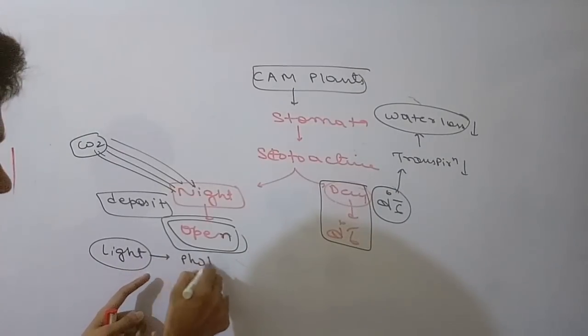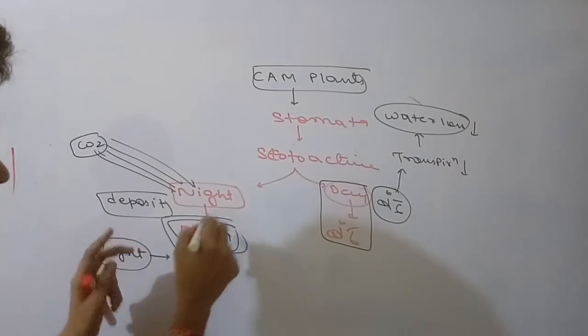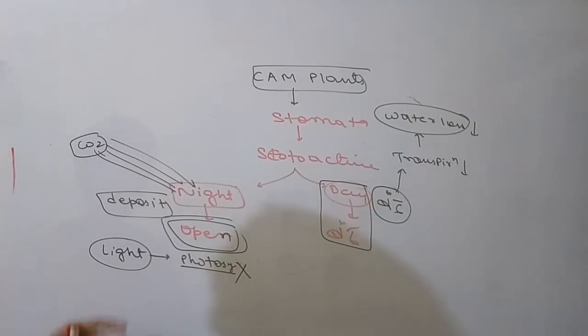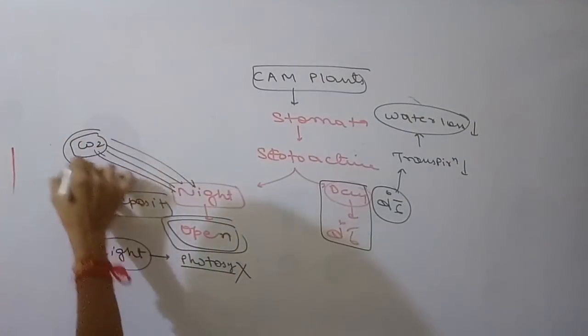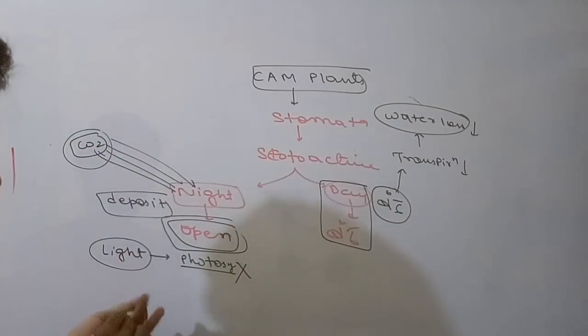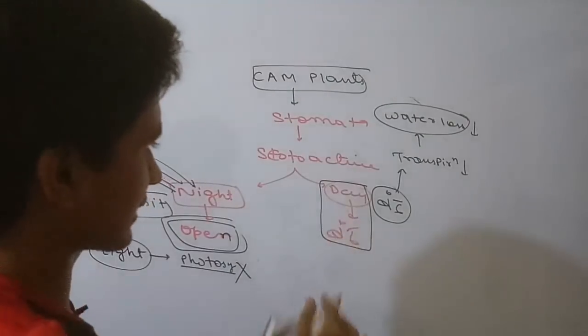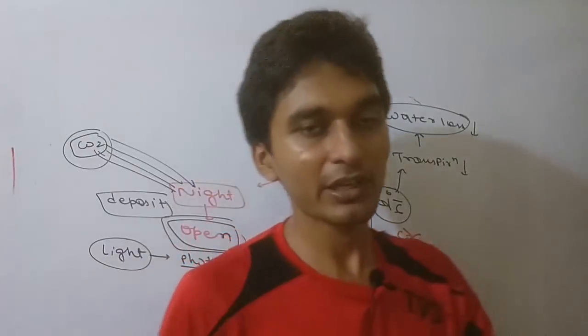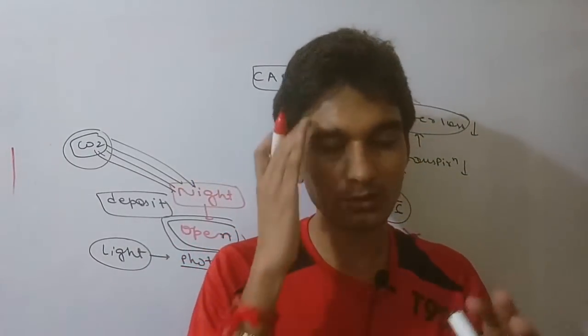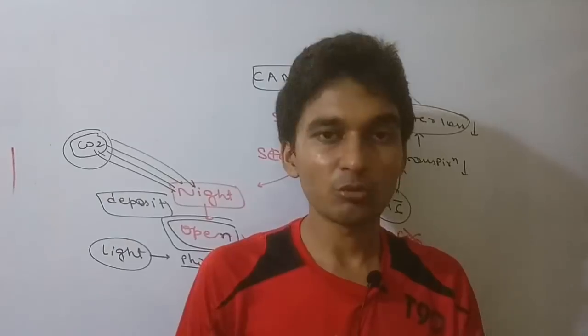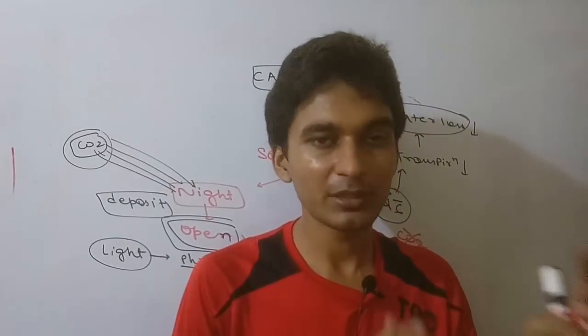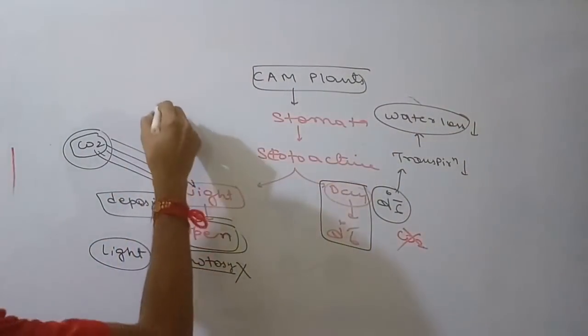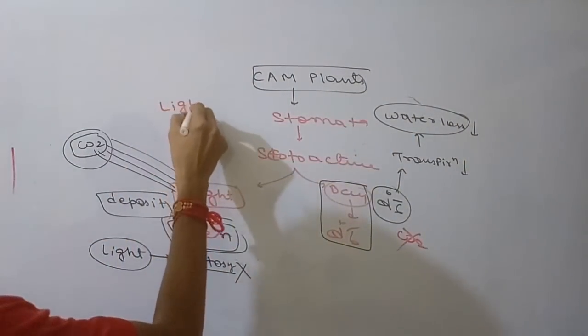At night, photosynthesis is not happening because light is not there. But plants can still take up CO2. At night, CO2 is taken up even though stomata are open at night when there is no light.